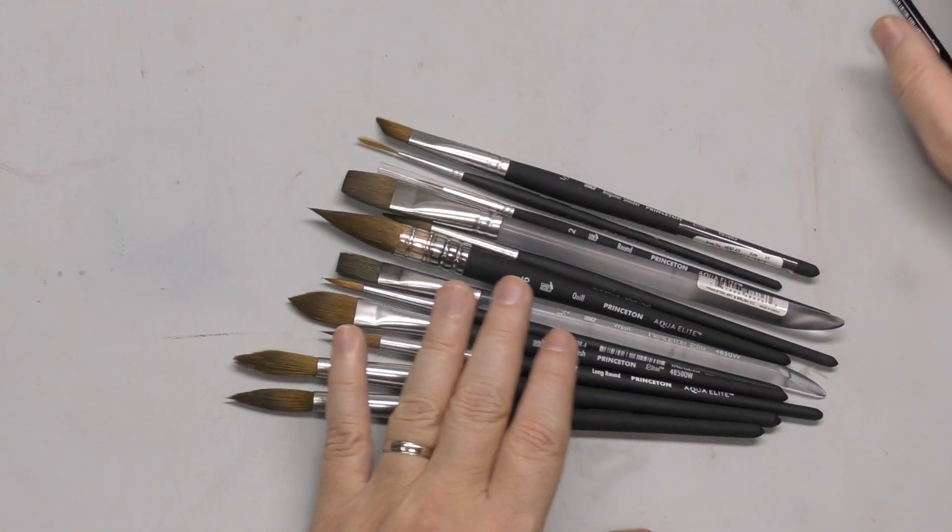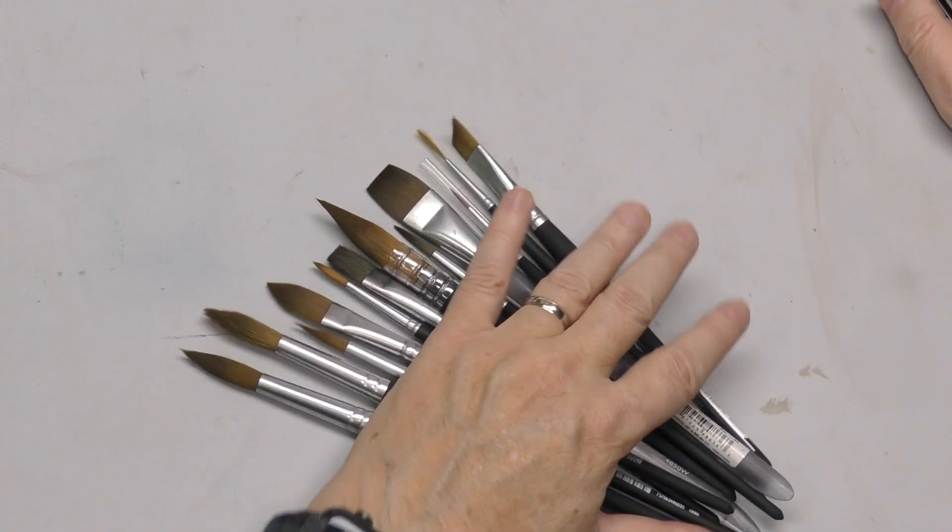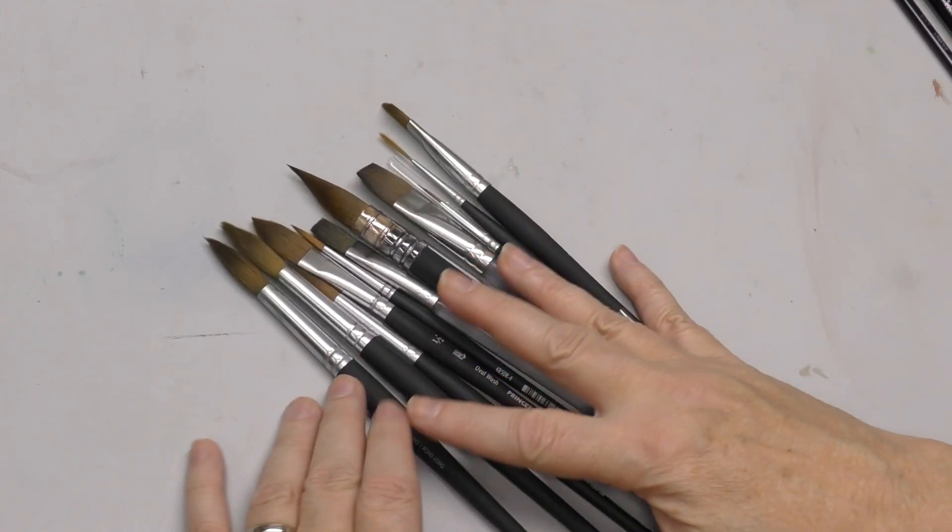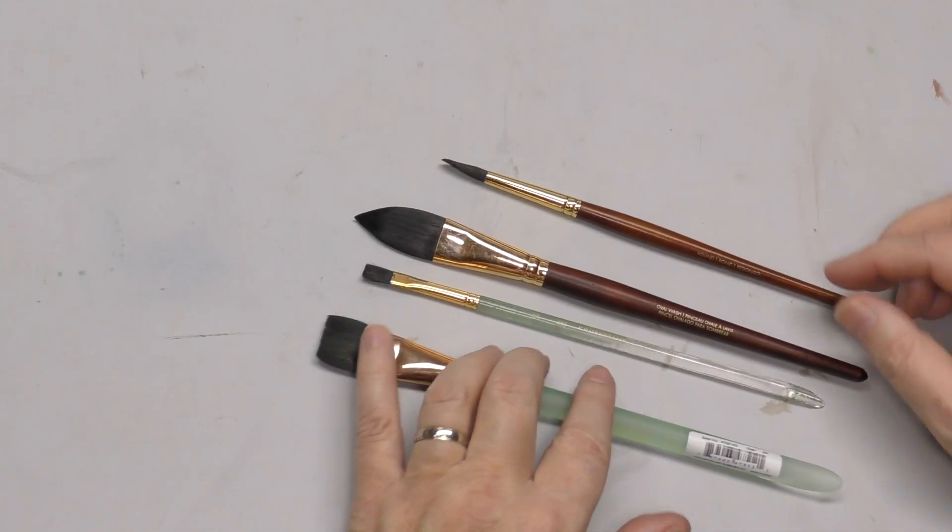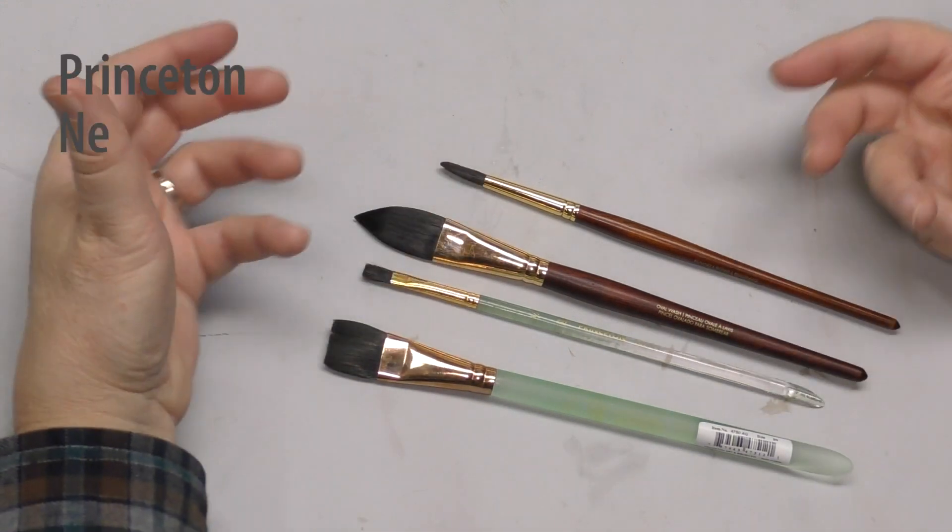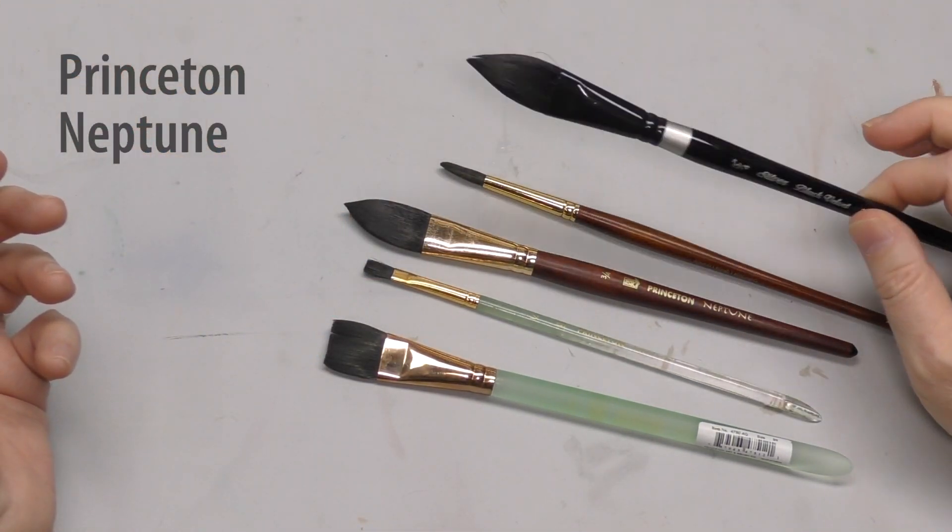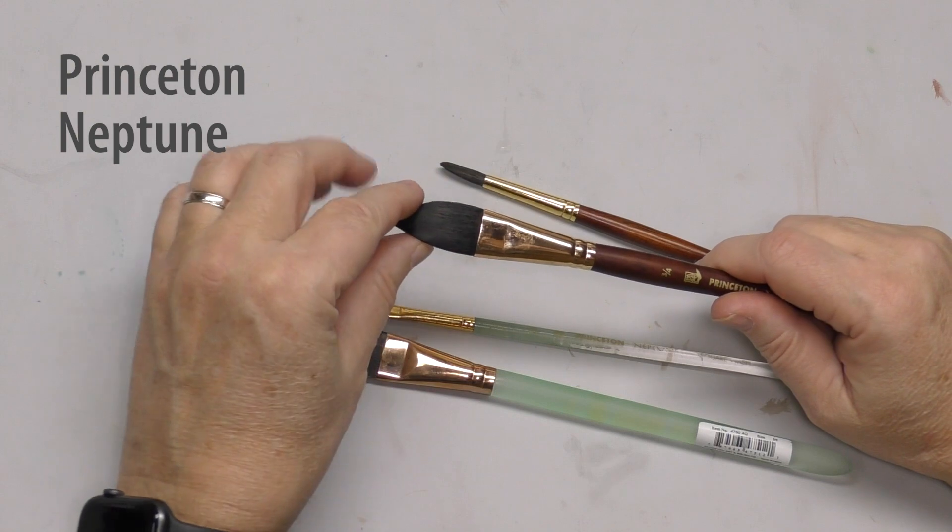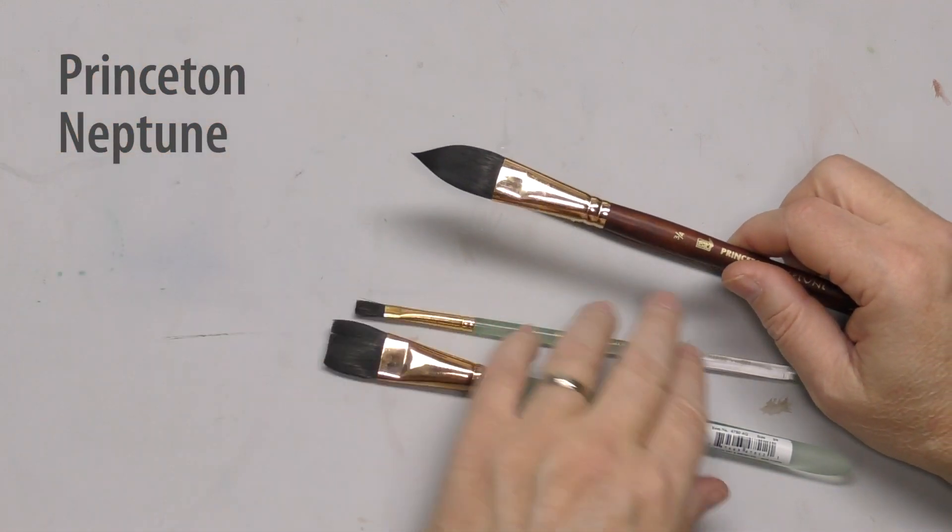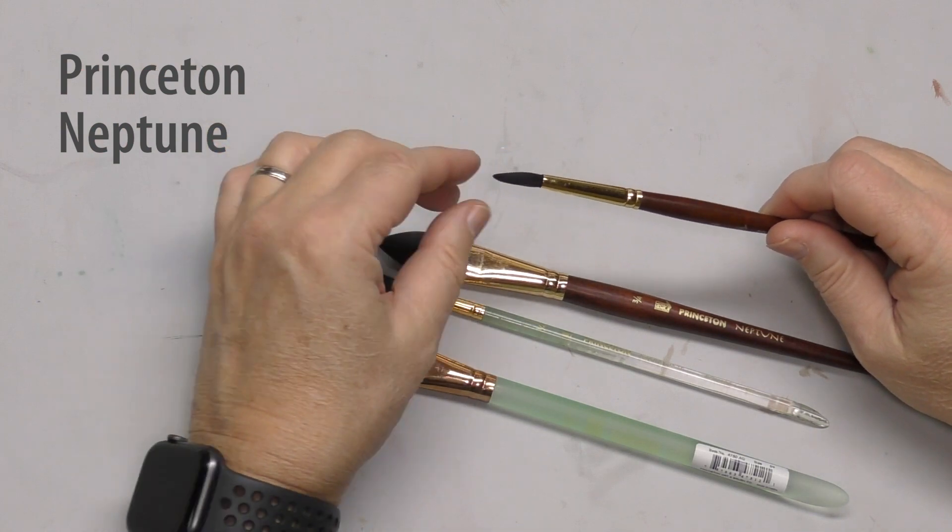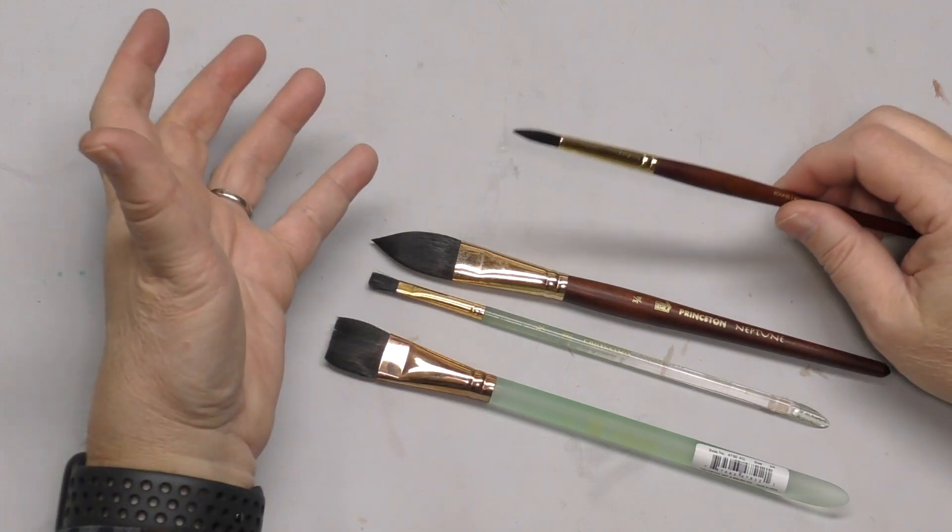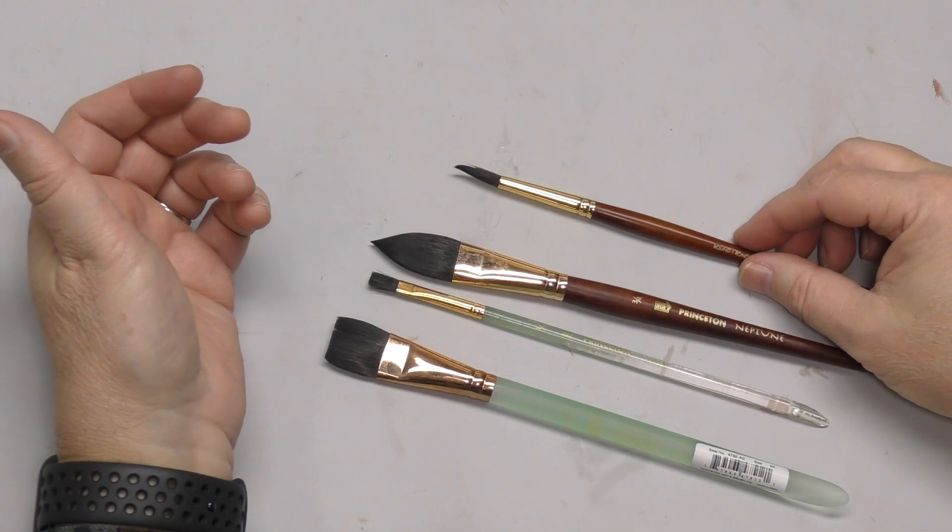So, those two bring up the top and kind of round out, from the more all-purpose category to the softer category, my most used brands. Also used brands, been around this channel long, you know I love Princeton Neptune. Now, the Princeton Neptune is closer in type to the Silver Brush Black Velvet. It's meant to be a squirrel imitation. It's soft. It has a tiny bit more snap than the Silver Brush Black Velvet.